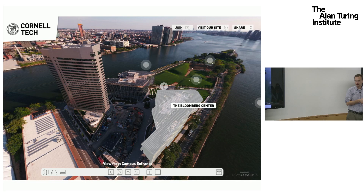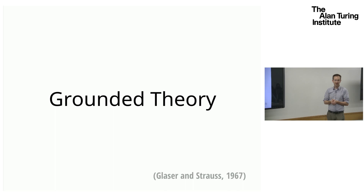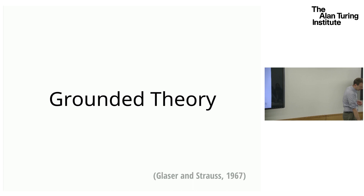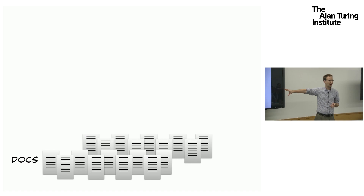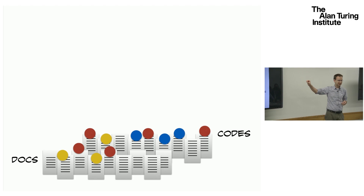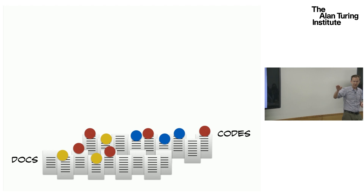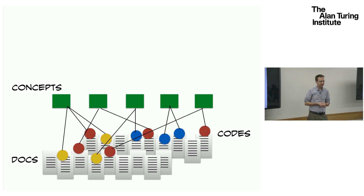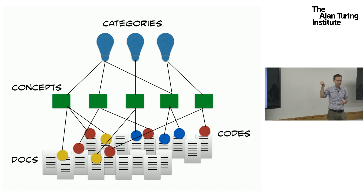Grounded theory comes from the sociology and ethnography literature, from the late 60s. The idea is that you start with a whole bunch of documents — that's the 'grounded' part — so you don't come with ideas about what's in the documents, you come with the documents themselves. You read them over and over again, adding codes, maybe little post-it annotations of different colors. You find correspondences, and eventually you generalize those codes into higher-level categories, grounded in the actual documents.